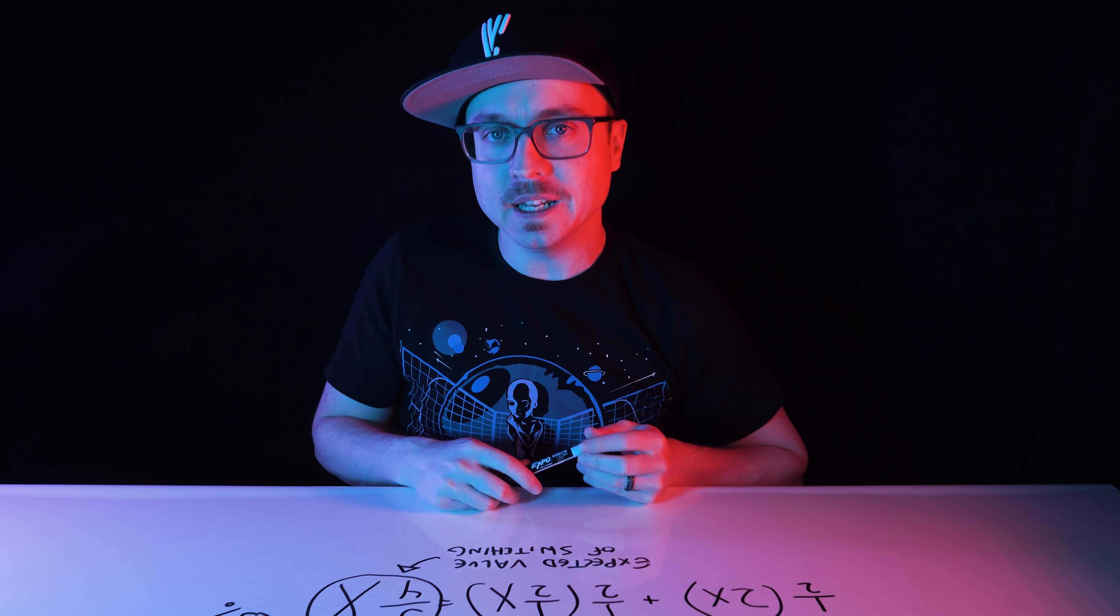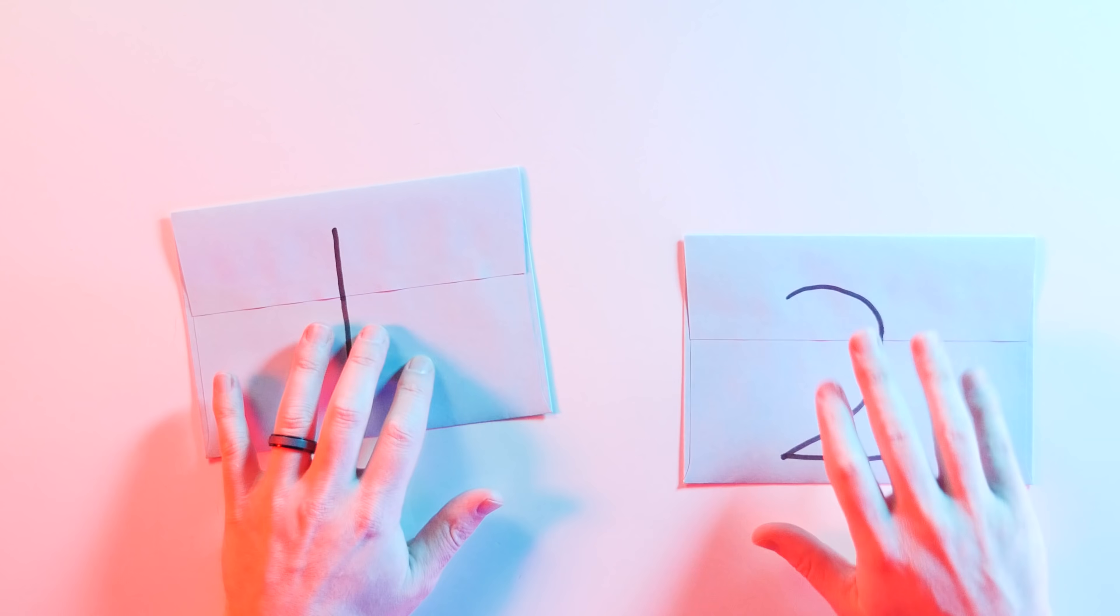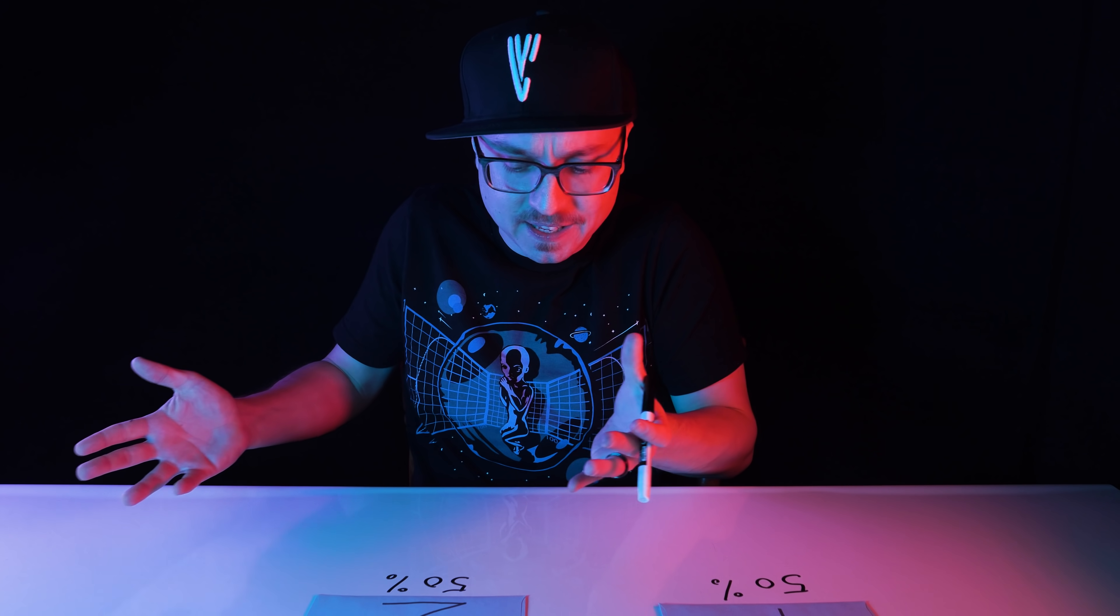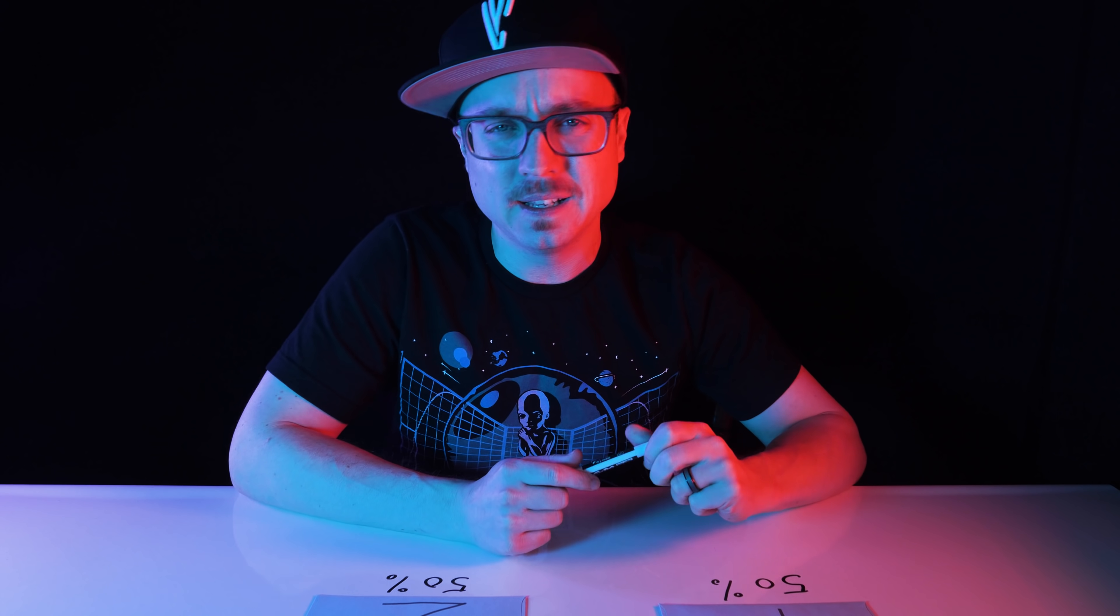Half of the time the other envelope will contain 2X, and half of the time the other envelope will contain 1 half X, which equals an expected value of 5 fourths X. 5 fourths X is 25% more than just X, so our best possible choice is to switch to the other envelope. Cool. We did it. But that makes no sense! You have a simple clean 50-50 chance of choosing the envelope with more money inside and switching can't change that, but the math just told us that it can.